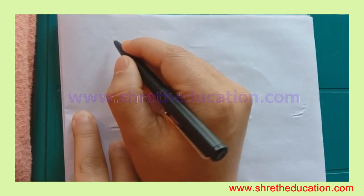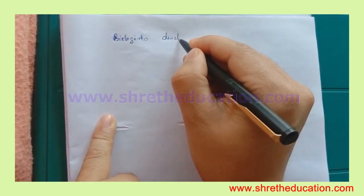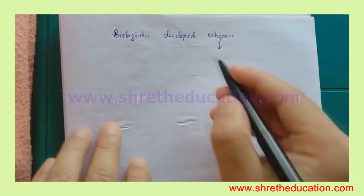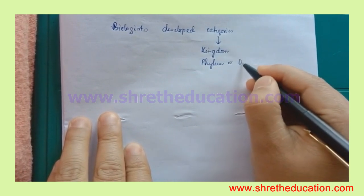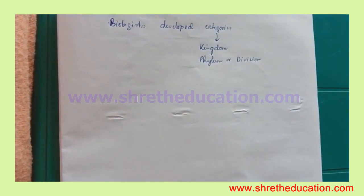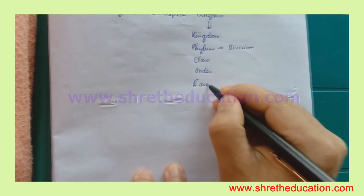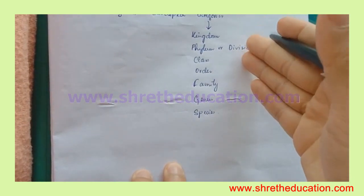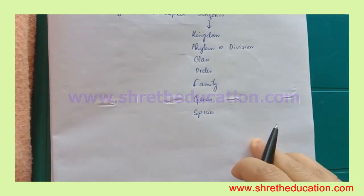Now, let's see how biologists classify living organisms. Biologists have developed the following categories: kingdom, phylum, division, class, order, family, genus, and species. This is the taxonomic category, which forms the taxonomic hierarchy.